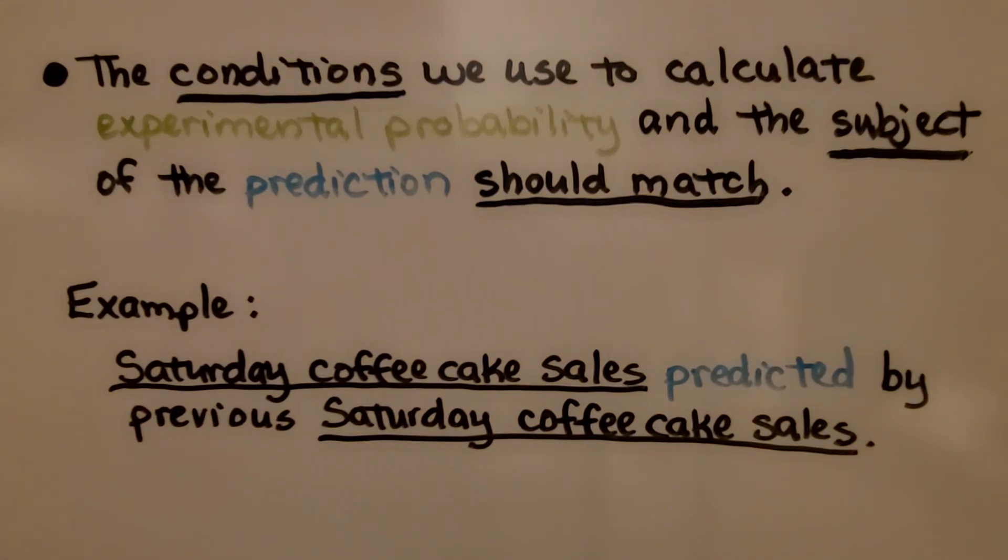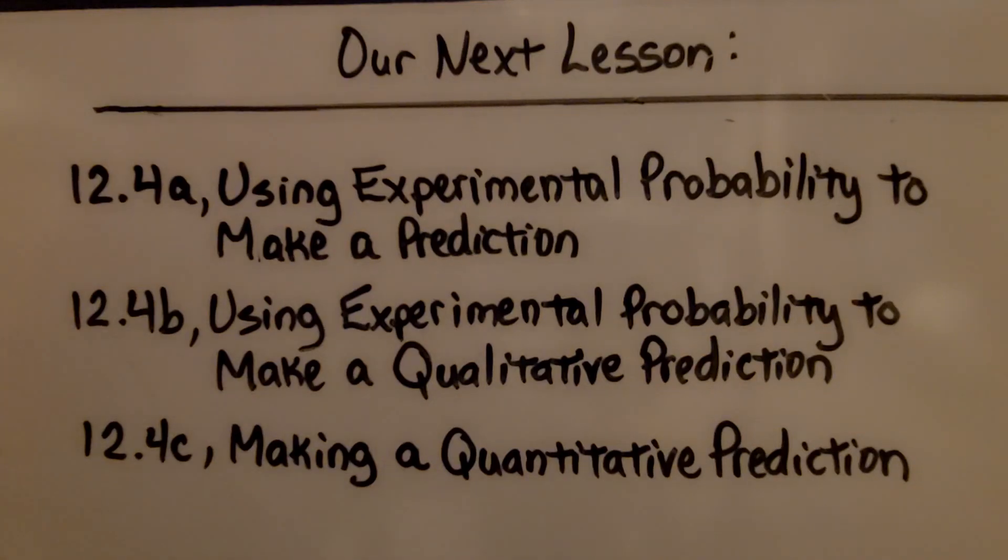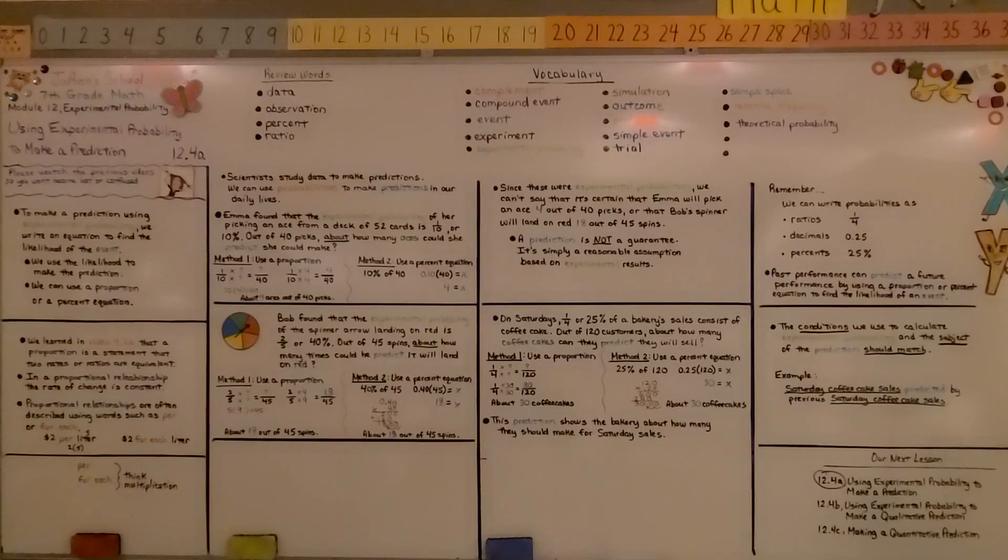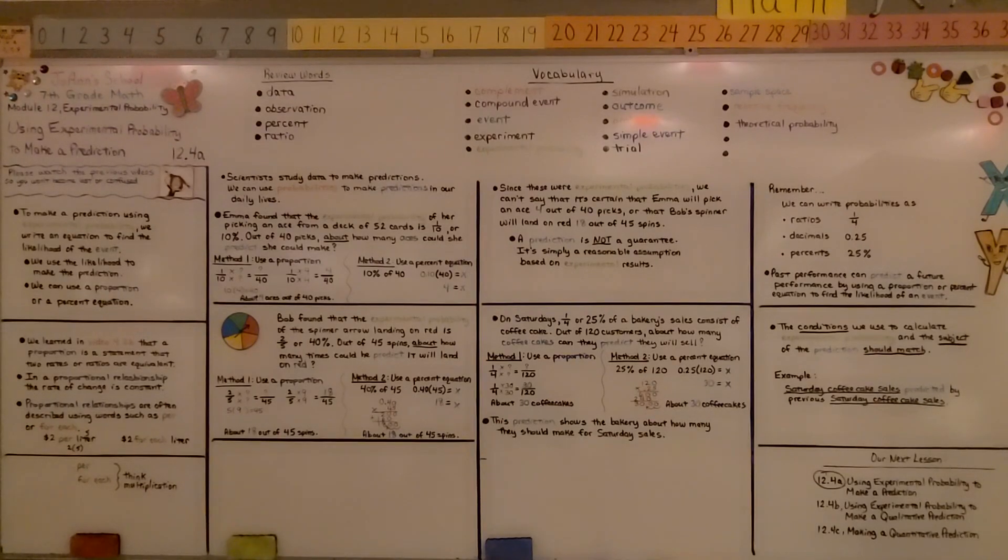We're finished with 12.4a. We're going to move on to 12.4b using experimental probability to make a qualitative prediction. Keep trying your best, have a great day, and join me for the next part of the lesson. Bye.